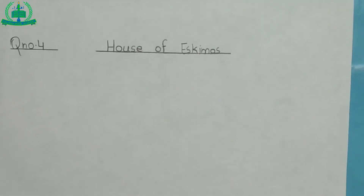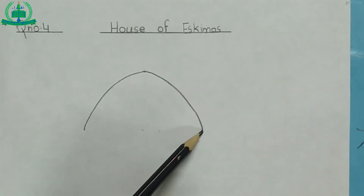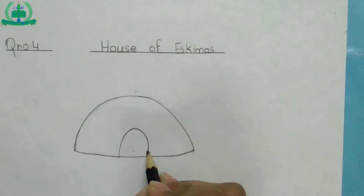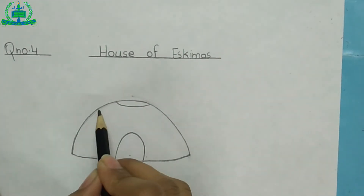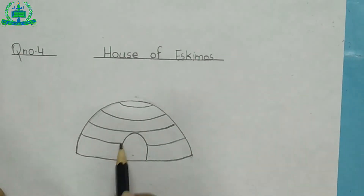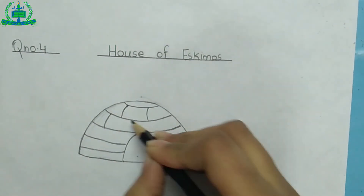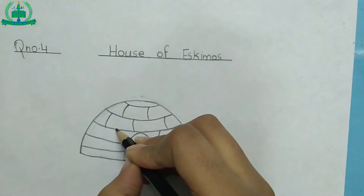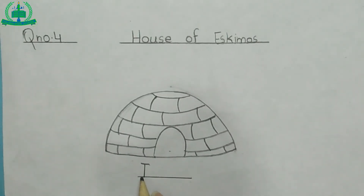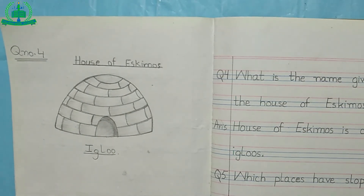Draw a diagram next to question number 4. First we make a semicircle, then make a door with small lines. Igloo is the house of Eskimos.